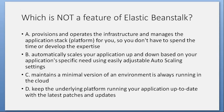Which is not a feature of Elastic Beanstalk? A. Provisions and operates the infrastructure and manages the application stack platform for you so you don't have to spend time developing the expertise. B. Automatically scales your application up and down based on your application's specific needs using easily adjustable auto-scaling settings. C. Maintain a minimum version of an environment always running in the cloud. D. Keeps the underlying platform running your application up to date with the latest patches and updates. Answer: C. Maintains a minimum version of an environment always running in the cloud.